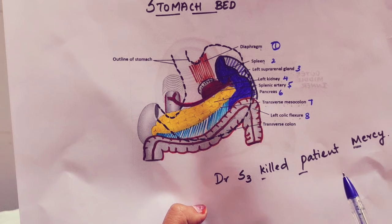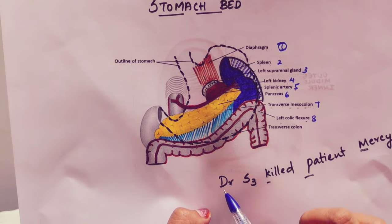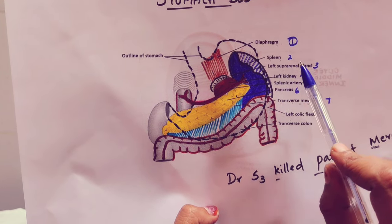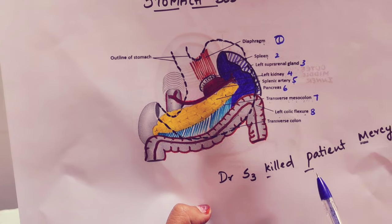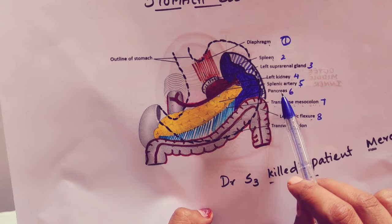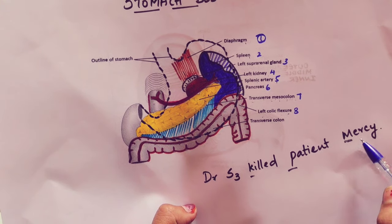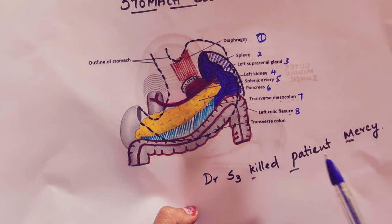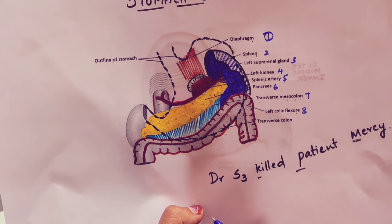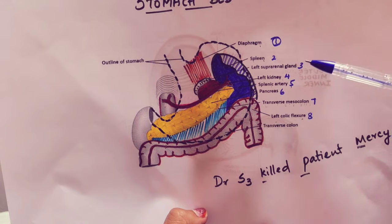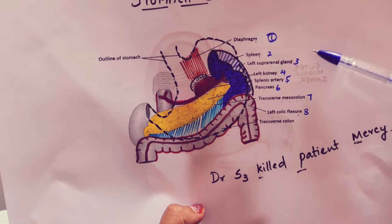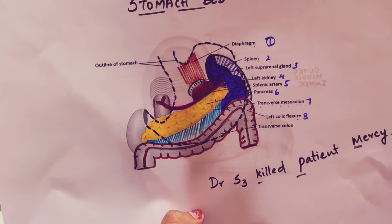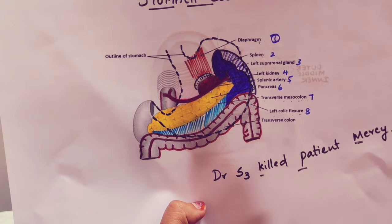So the eight structures forming the stomach bed are: diaphragm, spleen, suprarenal gland, kidney, splenic artery, pancreas, transverse mesocolon, and left colic flexure. You can remember these eight structures with this mnemonic: 'Doctor S3 killed the patient mercy.' D for diaphragm, S3 for spleen, suprarenal gland, and splenic artery, K for kidney, P for pancreas, MER for mesocolon, C for colic flexure.